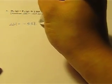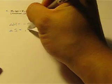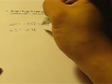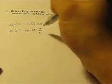So after my calculation of delta H and delta S, we are ready to calculate delta G. Let me write down the value of delta H that we have just calculated. Delta H in this case is negative 537.22 kilojoules and delta S is 13.74 joules per kelvin.